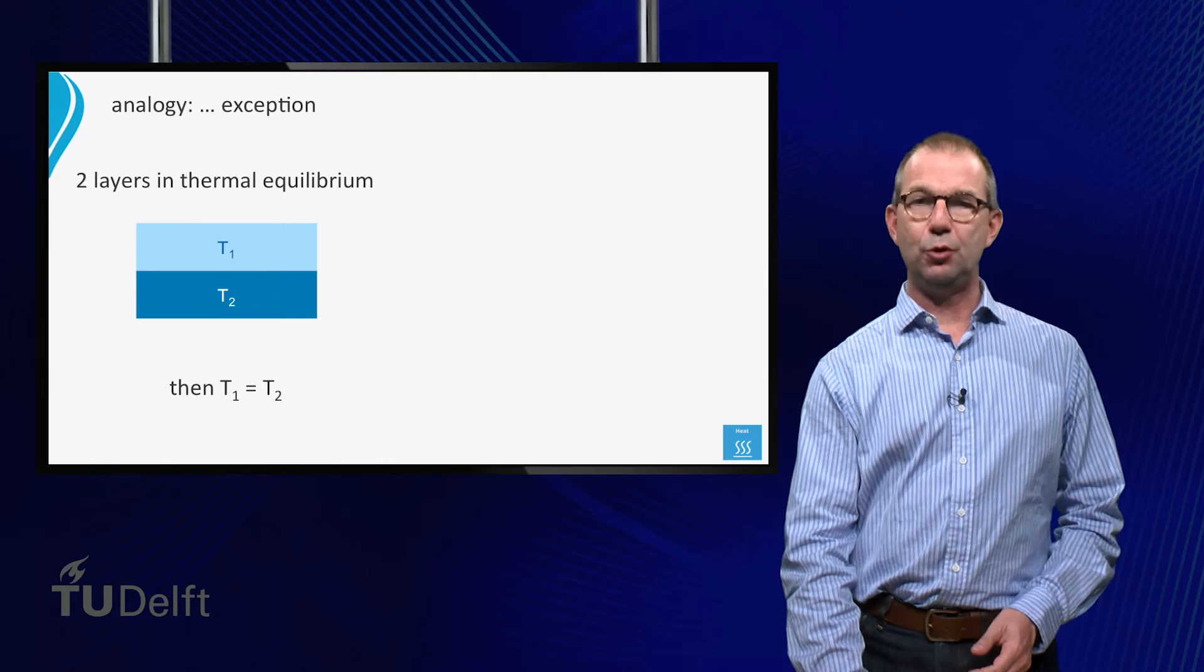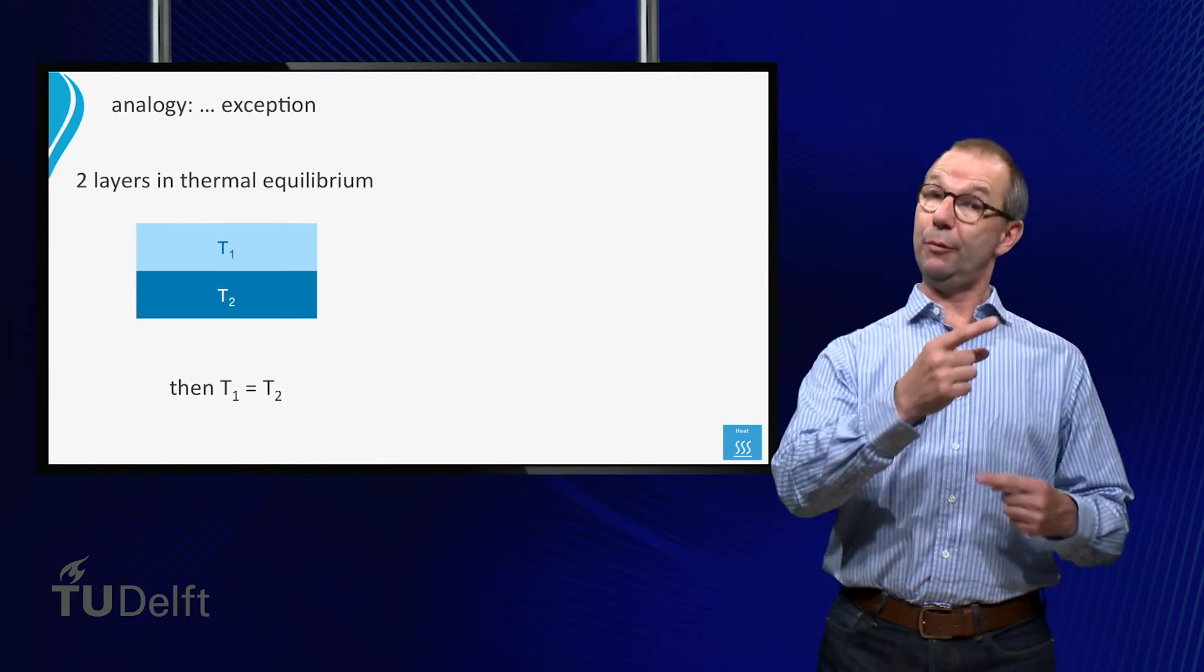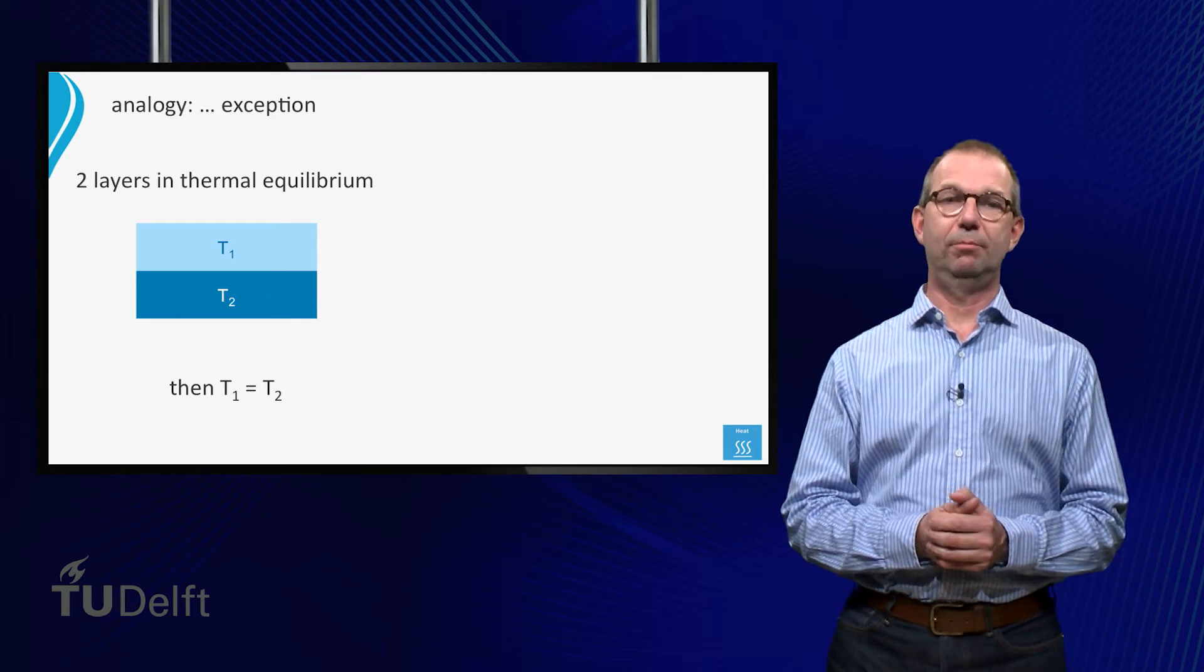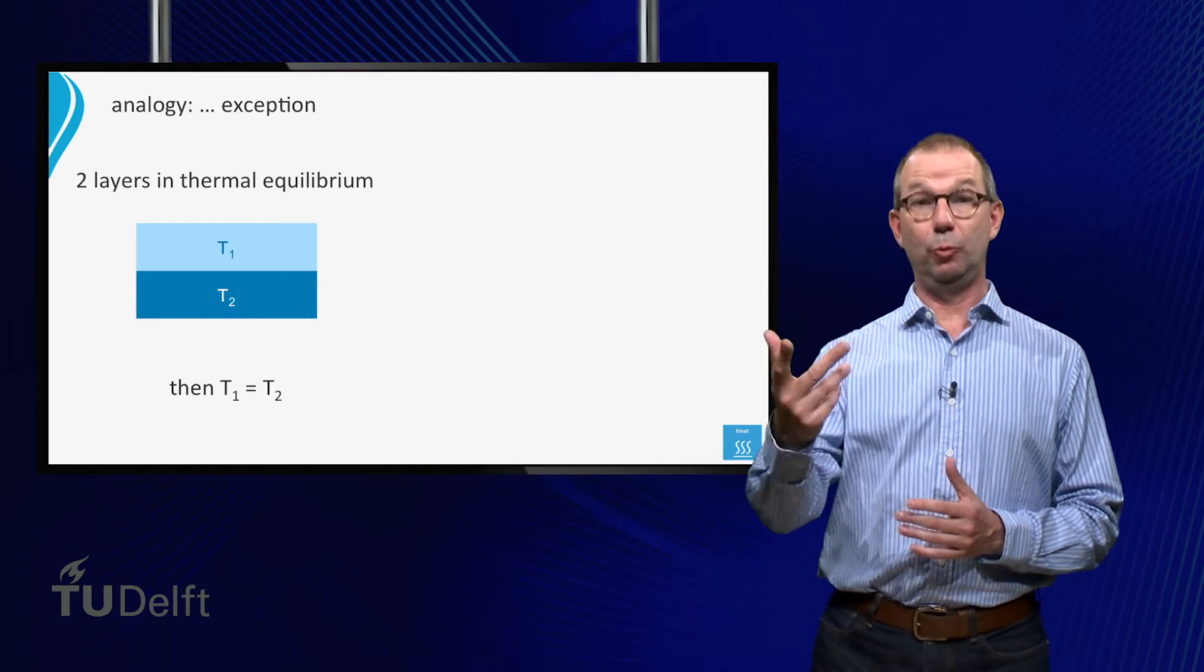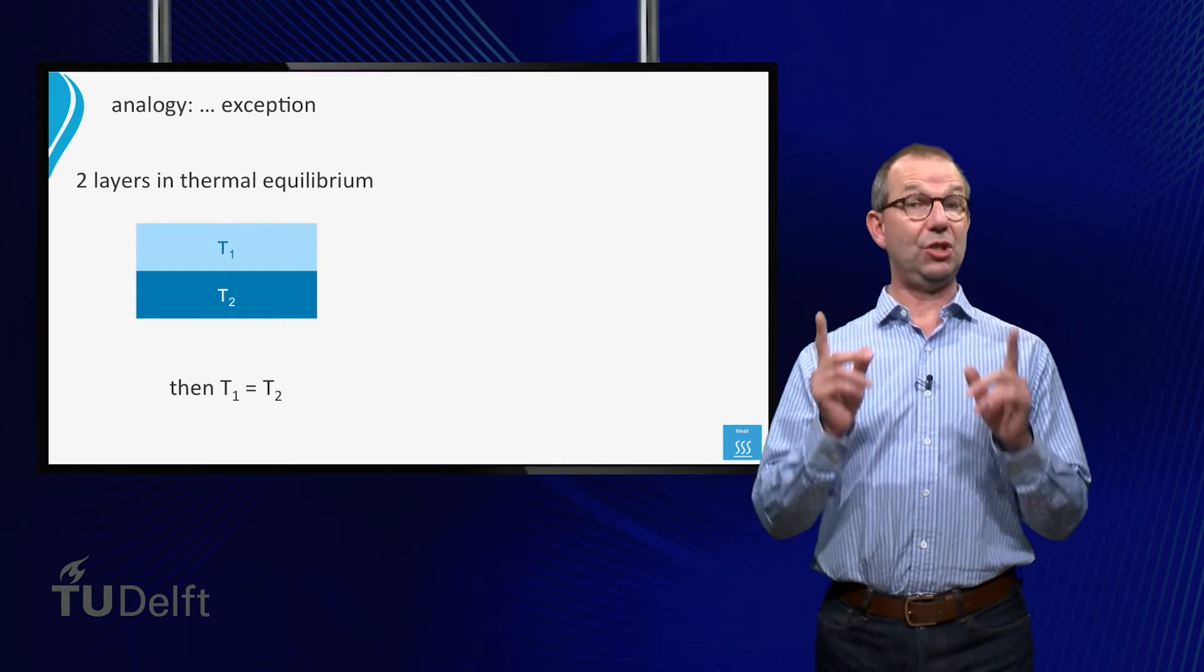Suppose we have two different layers on top of each other. Initially they may be at different temperatures. What will happen if we wait long enough? Well, surely after some time the system will reach thermal equilibrium, and both layers will have the same temperature.